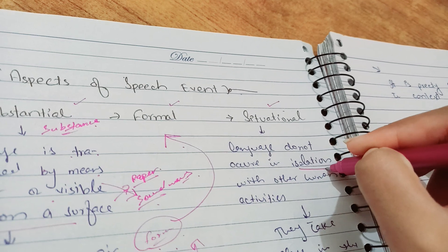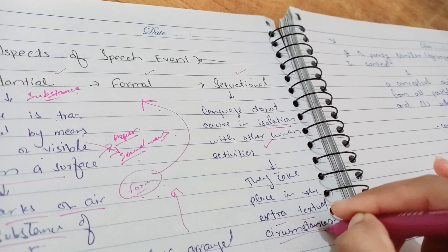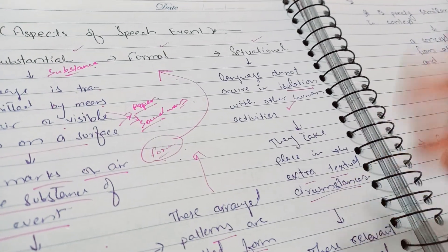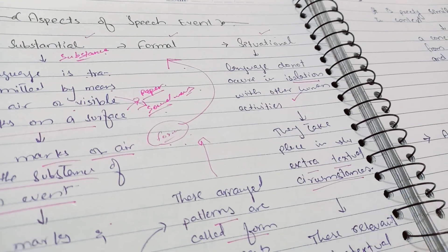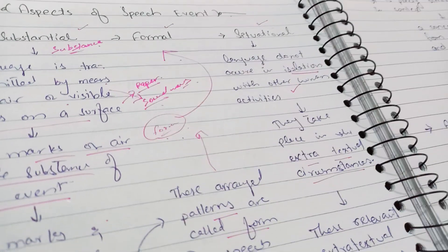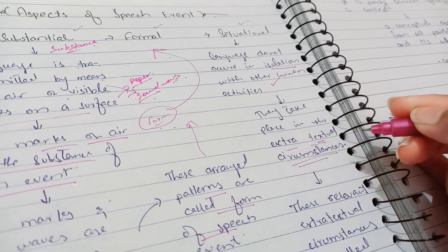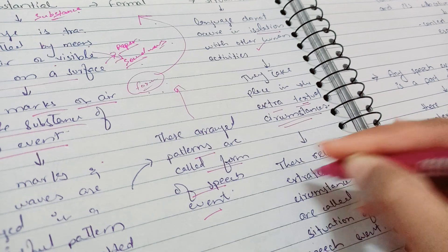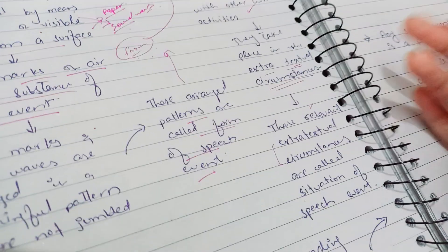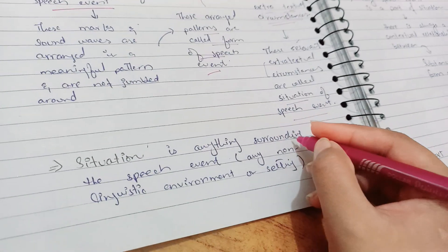All those marks — whether from speaking or writing — are arranged in a form. They are not jumbled or scattered, because if scattered you would not be able to decode what I am trying to say. That form is called the formal aspect of the speech event — they are arranged in a pattern which is the form of the speech event. The last aspect is the situational aspect, which states that language does not occur in isolation; it occurs with other human activities and takes place in an extra-textual circumstance.